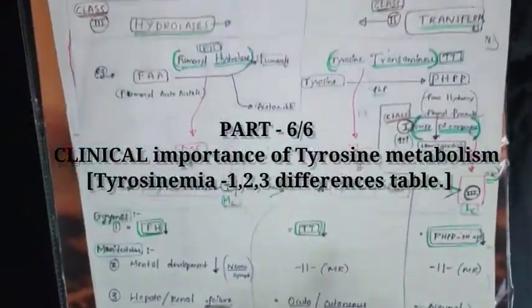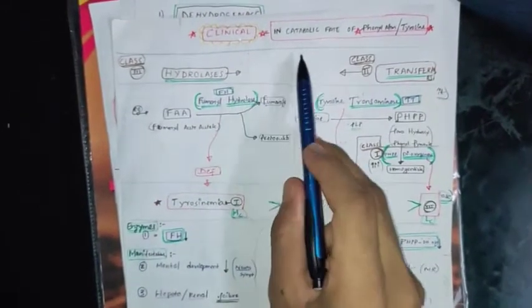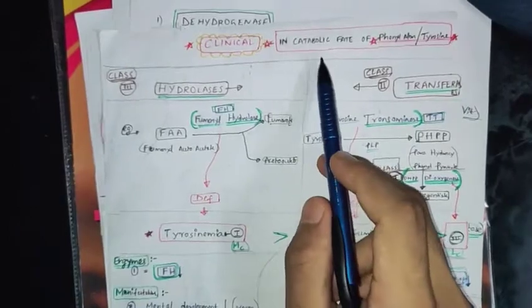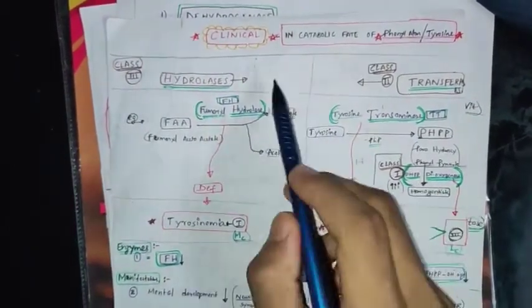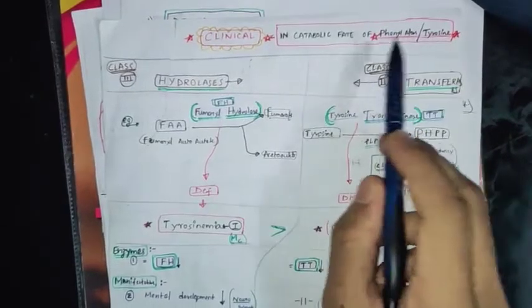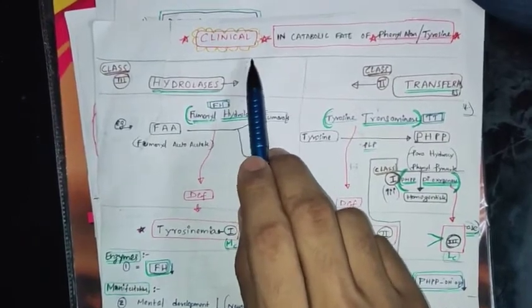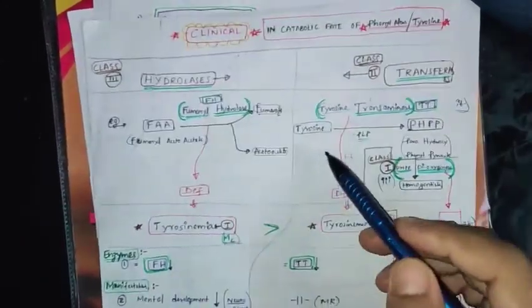This is a very important last slide covering clinical points in the catabolic fate of phenylalanine and tyrosine. I haven't discussed clinical points separately before — I've united all of them here at once. In the tyrosine metabolism diagram, I kept star marks on very important metabolisms. These have so much clinical importance that I've written them on a separate page at the end.